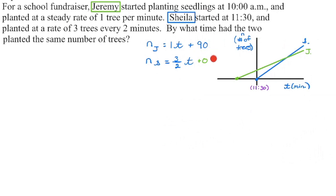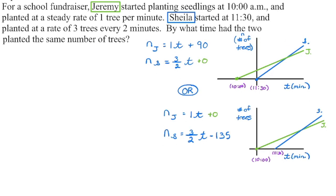So I can now graph those two equations and find the point of intersection to determine the time at which they planted the same number. Or if you want to set this up with 10 o'clock being at the origin, then this is going to be 11:30. So now at 10 o'clock, this is Jeremy. Jeremy has not planted any trees yet. So our y-intercept is zero.